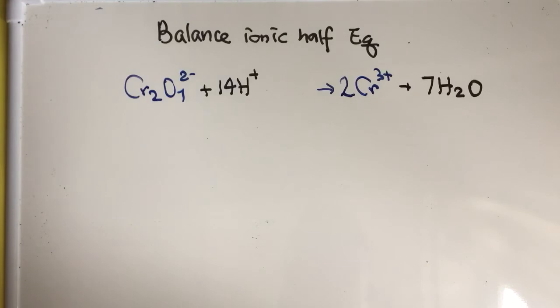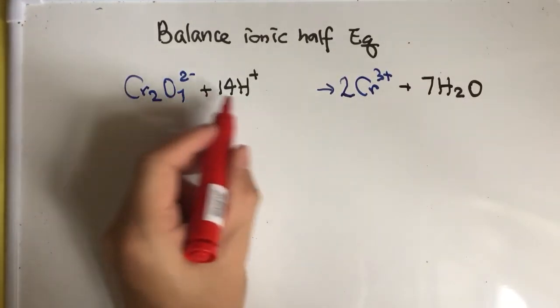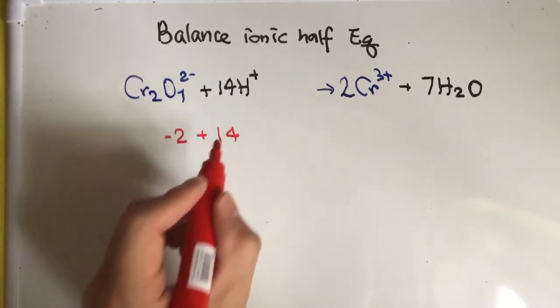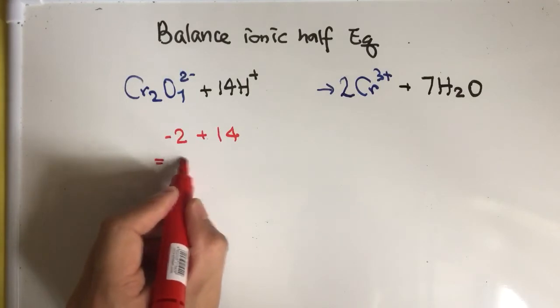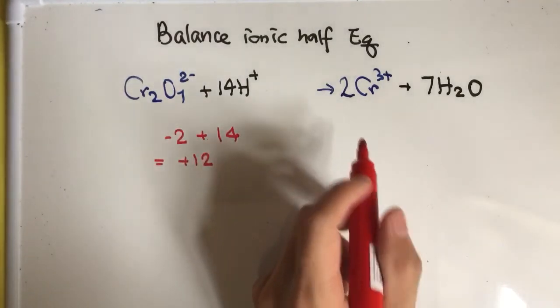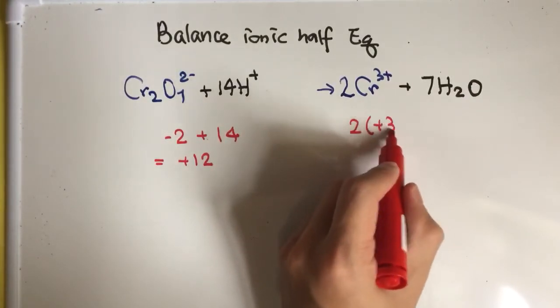Last but not least, you have to balance the charge before and after the reaction. In the reactant side there are 2- plus 14+, which is actually equal to positive 12. The product side has 2 times 3+, which is equal to positive 6.